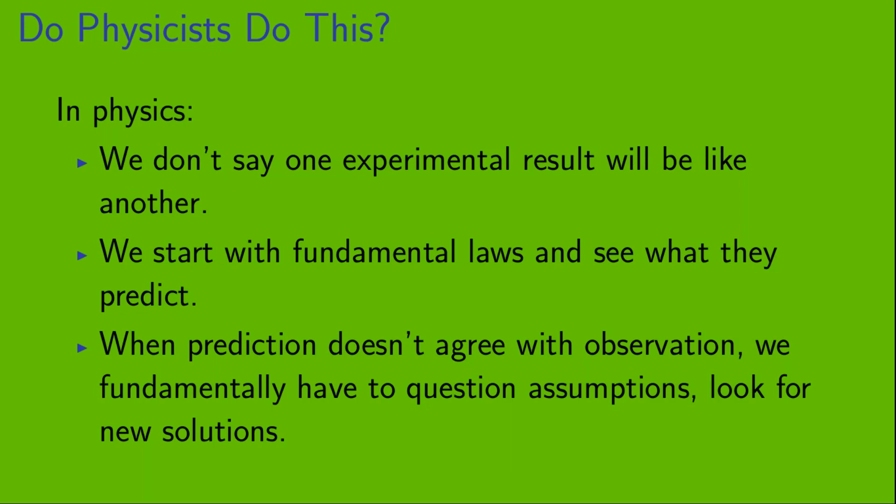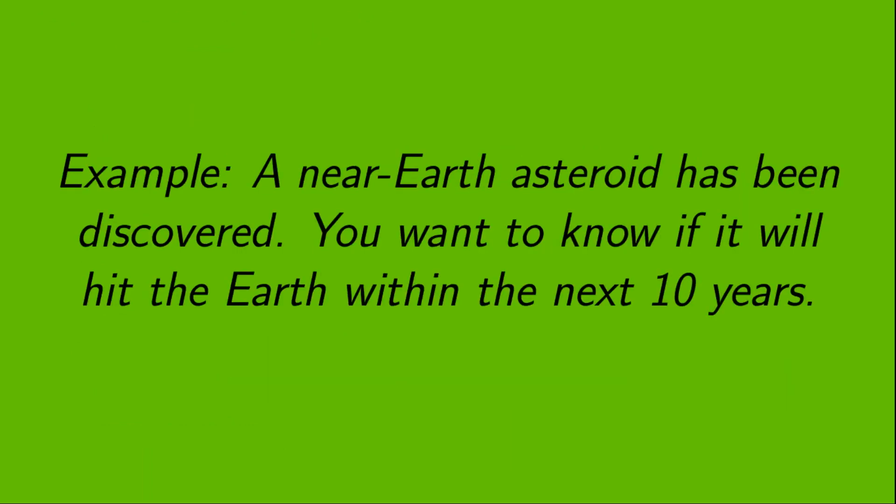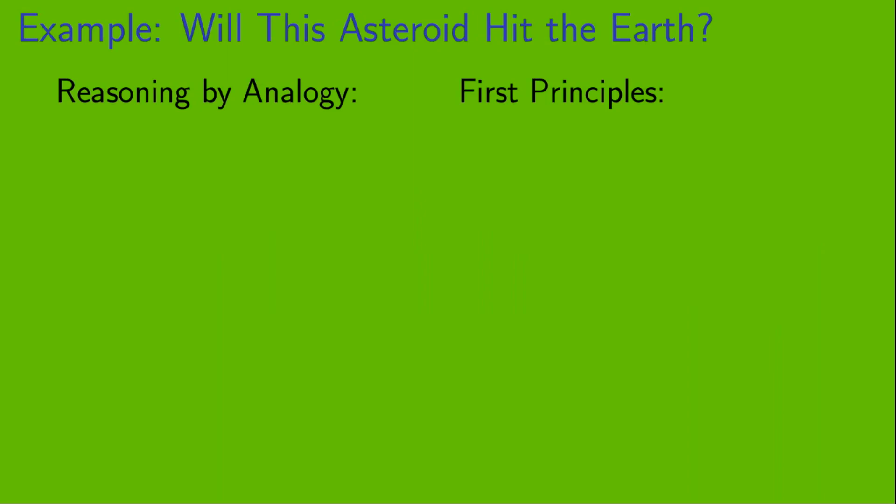So, let's look at an example of a physics-type problem where reasoning by analogy definitely wouldn't work and one has to use first principles. Here's our example. A near-Earth asteroid has been discovered. And, you want to know if it will hit the Earth within the next 10 years. Reasoning by analogy would tell us to do the following. Look at other similar asteroids and ask, did they hit the Earth? Clearly, that's not going to work for this problem.